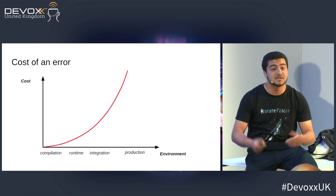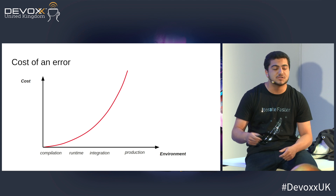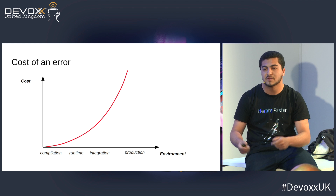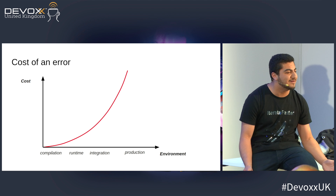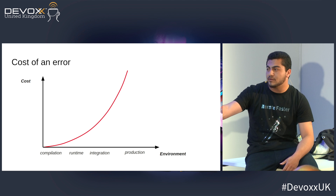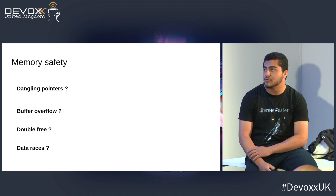An error at runtime is bad — that can be a mess, because if you use a Tomcat server that took 50 minutes just to boot, and you have to make some calls to reach that error, that can be a mess. In integration it's fine, but in production that costs a lot. Breaking a feature just for a null pointer exception is terrible. So the goal is to catch all errors during compilation time.